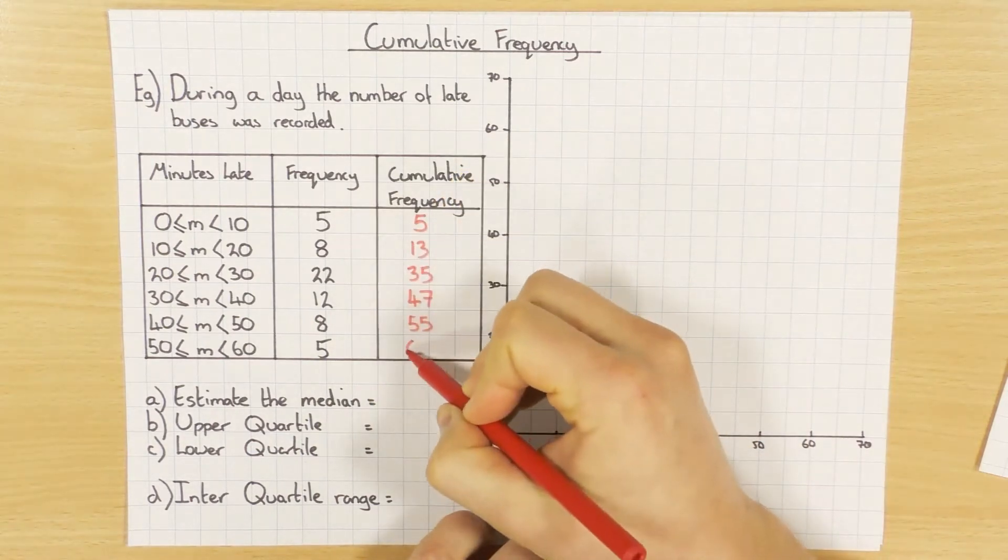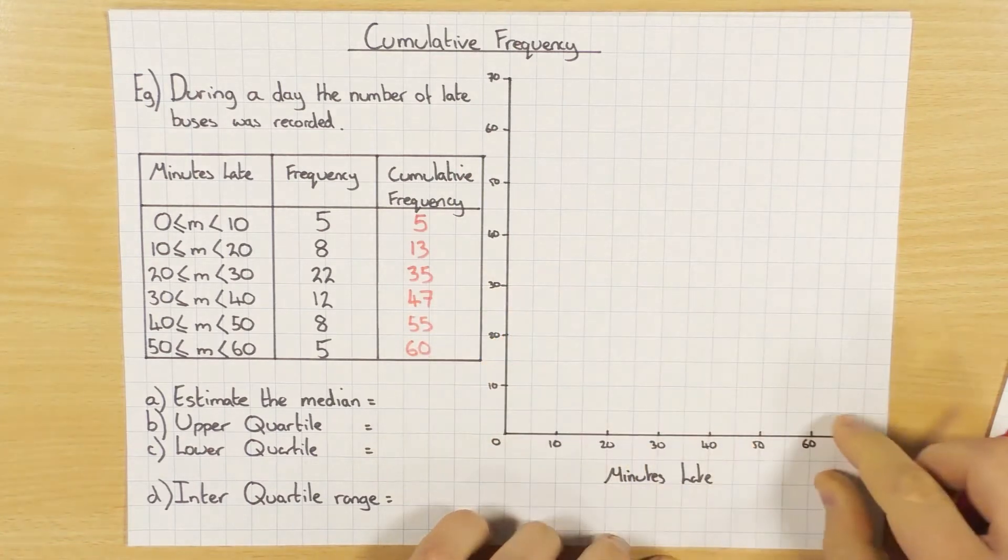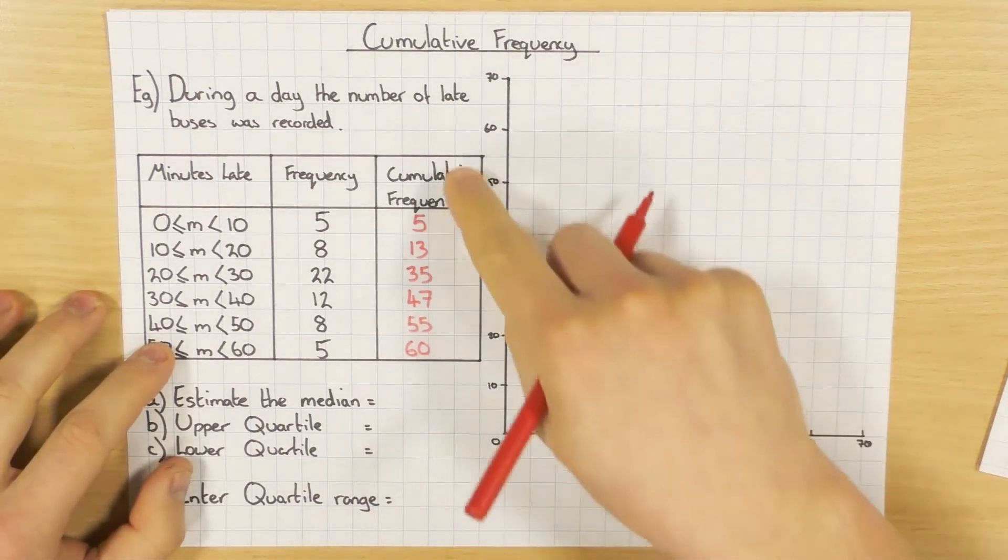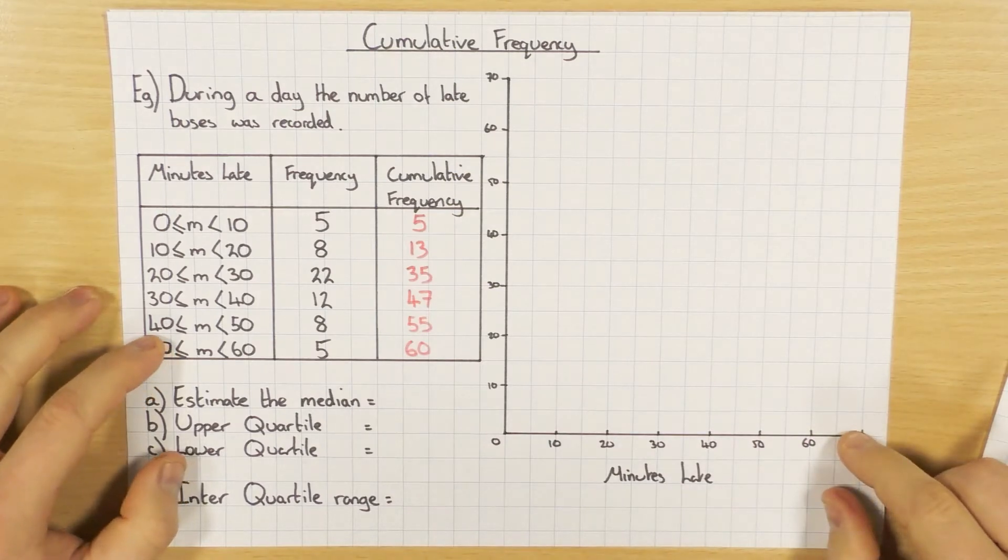And then add them all up, and then you get 60, so there are 60 buses in total. So it's just a running total when you're working out the cumulative frequency column there.